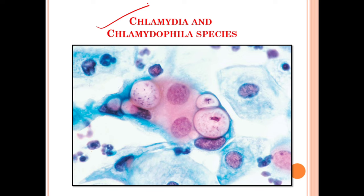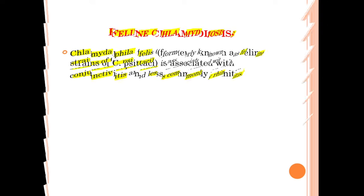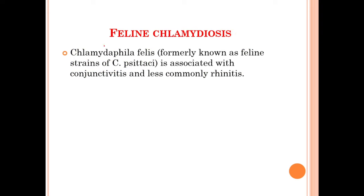Without any further due, let's get started. We will discuss about the feline chlamydiosis. The causative agent is Chlamydophila felis, which is formerly known as the feline strains of Chlamydophila psittaci, and it is associated with conjunctivitis and, less commonly, rhinitis.